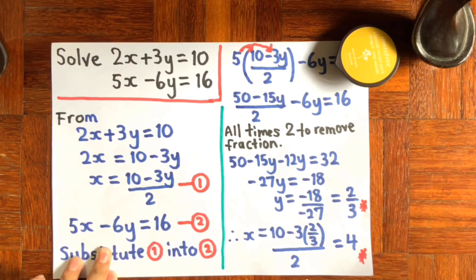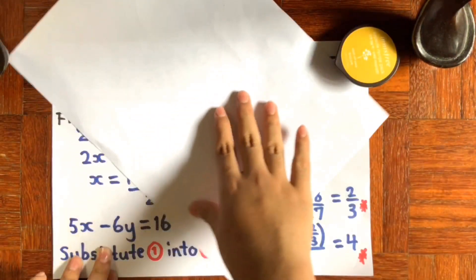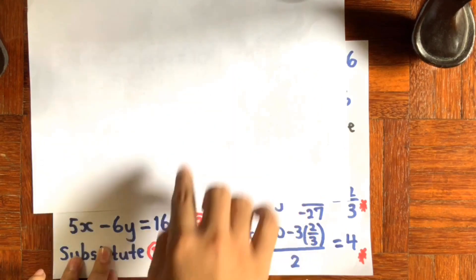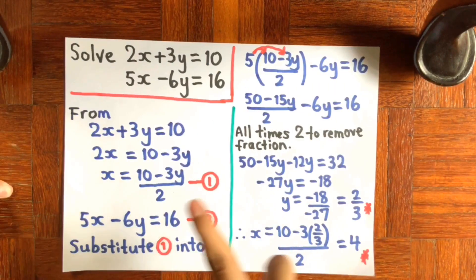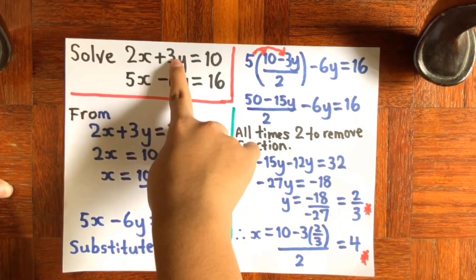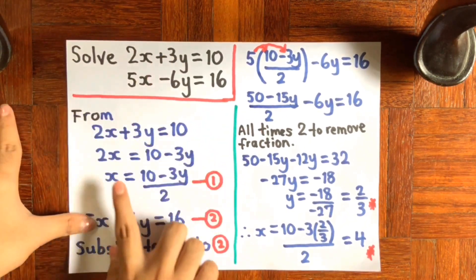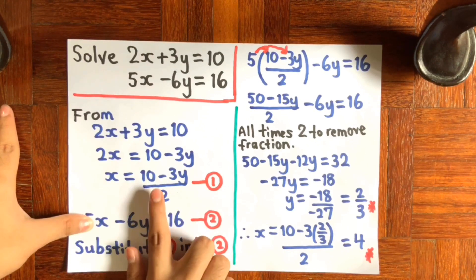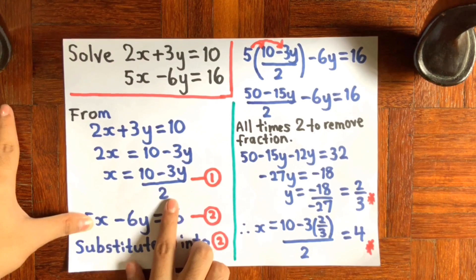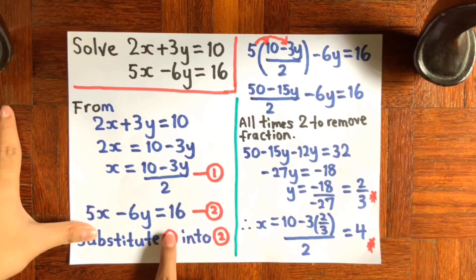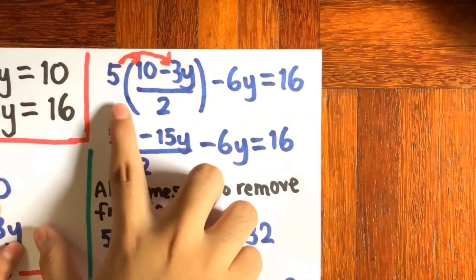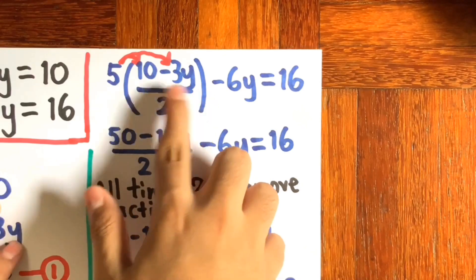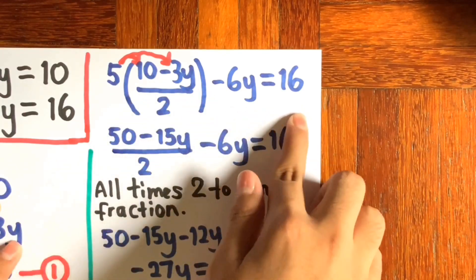Then we're going to set this aside for a while and look at the second equation. Our second equation is 5x minus 6y equals to 16. For this method, you need to substitute the expression for x from the first equation into the second equation. So it's going to be: 5 bracket (10 minus 3y divided by 2) minus 6y equals to 16.